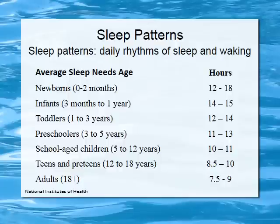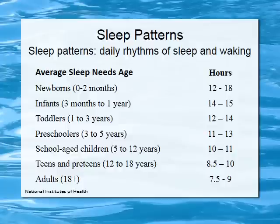Once we hit eighteen or whatever our full body cycle is — some people hit it by seventeen, some by twenty-one — once we have an adult body and brain, we can reduce down to seven and a half to nine hours of sleep depending on the individual. Don't let your ten- or twelve-year-olds stay up. They need to go to bed if you want their brains and bodies to grow properly.